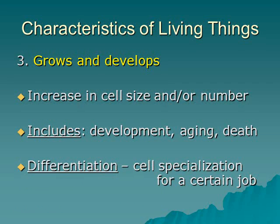The third characteristic is that living things grow and develop. For example, grass gets taller — people mow it because it keeps growing. The artificial turf on the football field on campus, however, doesn't grow — no lawn mower is needed because it is synthetic, meaning man-made. Develop means going through stages, so organisms go from one stage in a life cycle to another. All different organisms have life cycles, which we'll discuss throughout the semester.